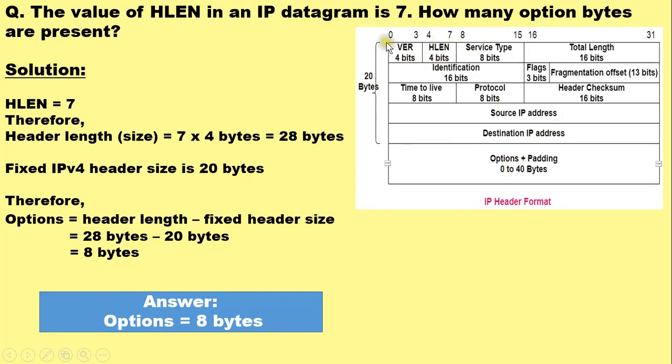The IPv4 header has a fixed size of 20 bytes which occupies 5 rows, each having 32 bits, that is 4 bytes.